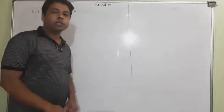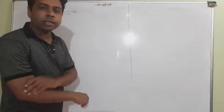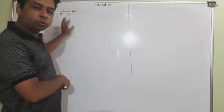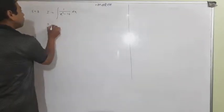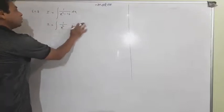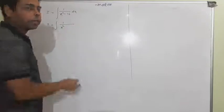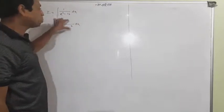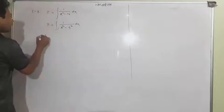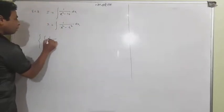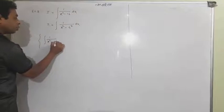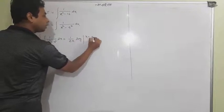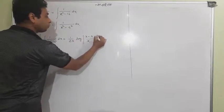Good morning students. We saw standard formulas in the last class. Now we will take some questions based on that. Example number 8 looks very similar — the question is 1 upon x squared minus 16. You will write 16 as 4 squared and compare with the formula. The formula is: integral of 1 upon x squared minus a squared dx equals 1 upon 2a times log of (x minus a) upon (x plus a).